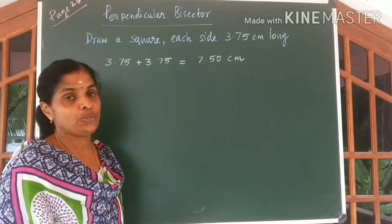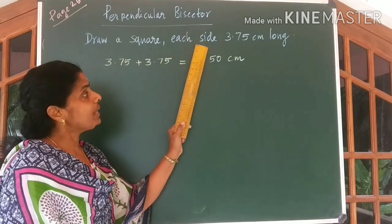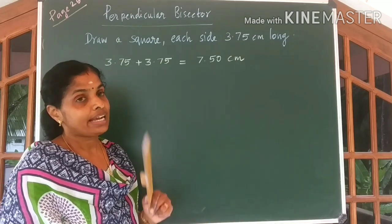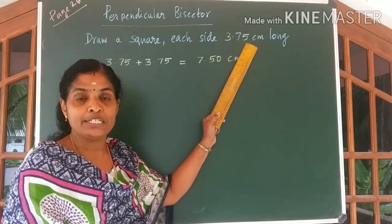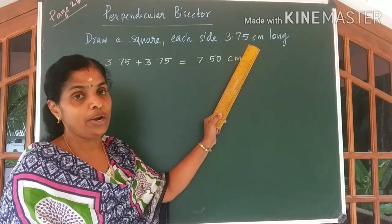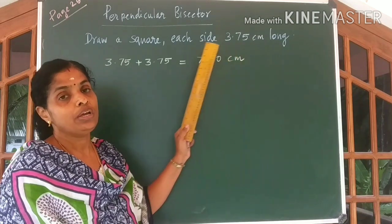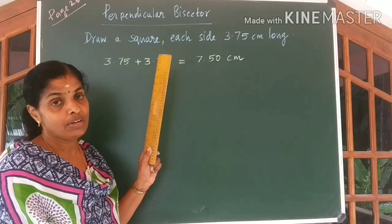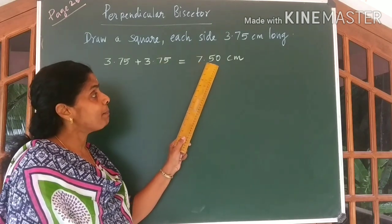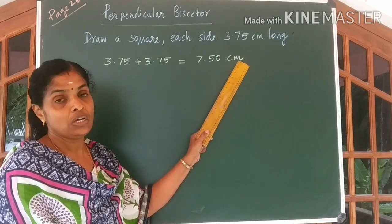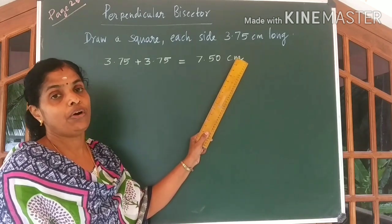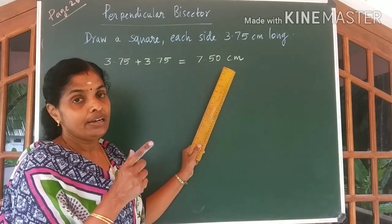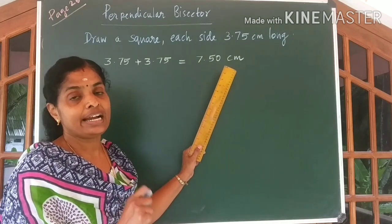The same idea is used to draw a square with each side 3.75 centimeters long. Just imagine — can you measure 3.75 centimeters directly using your scale? No, it is not possible. So what do we do? We take the double of it: 3.75 plus 3.75 gives you 7.5 centimeters. So first we have to draw a line of length 7.5 centimeters, then take half of that line and construct the square.